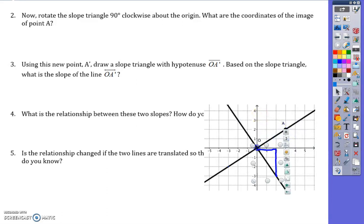What are the coordinates of point A now? They are (2, -3). This is A prime. Based on this slope triangle, what is the slope? It is negative 3 over 2, because it's down 3 and over 2.